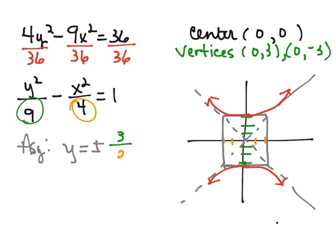over the square root of the term that's under x squared, which would be 2. So just like slope is always y over x, we're going to use the square root of the term under y over the square root of the term under x. And so there are our asymptotes.